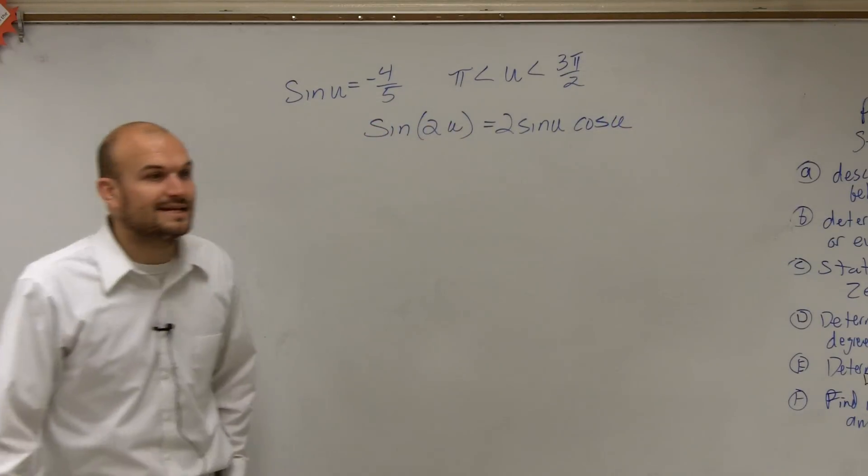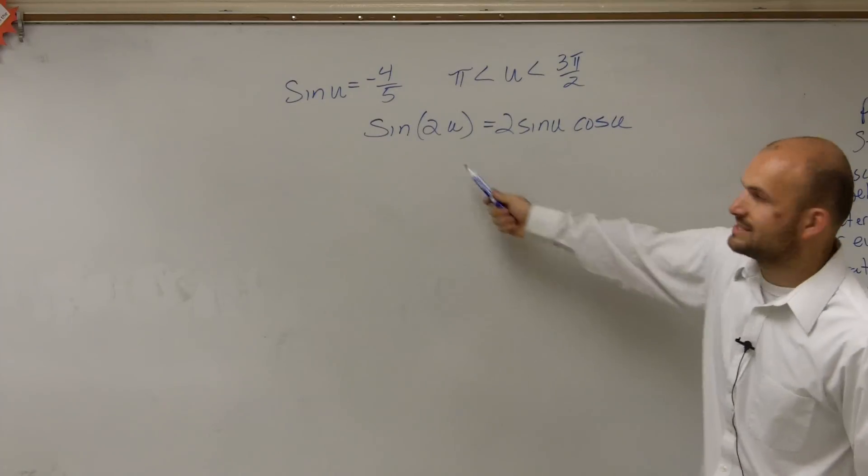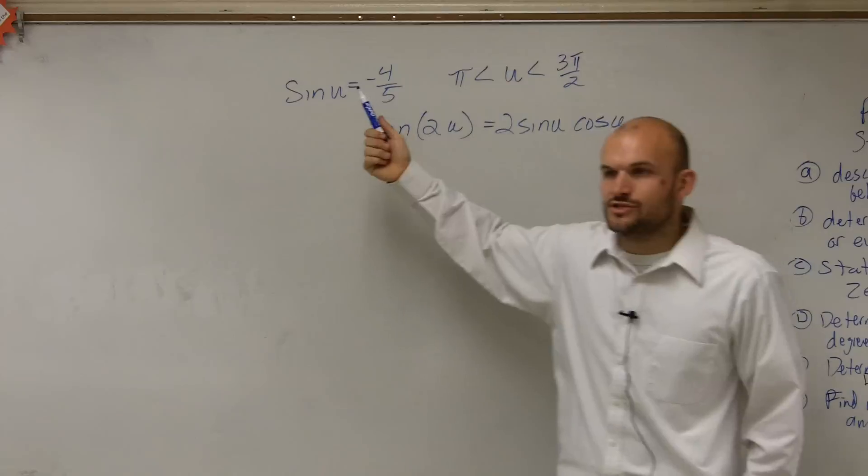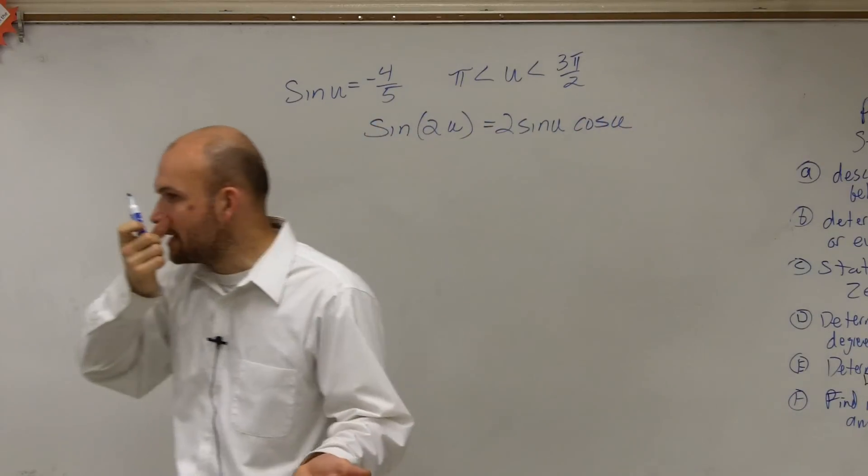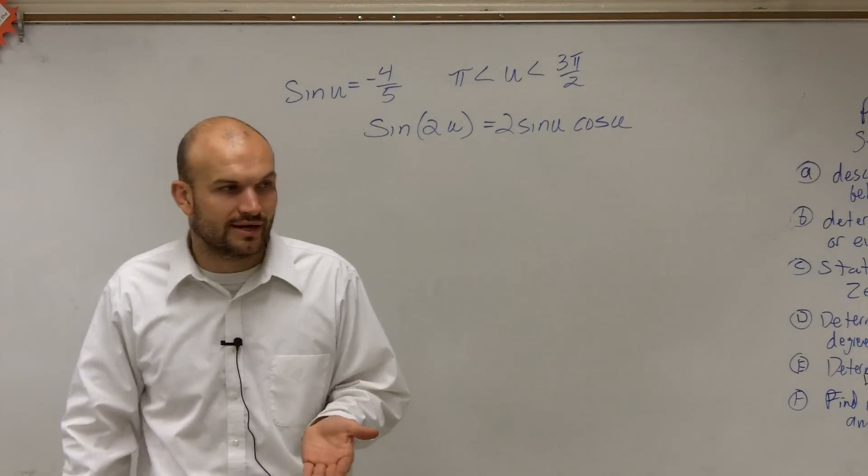So what I need to do is I need to figure out what is the sine of u and what's the cosine of u. Well, it tells me what the sine of u is, but now I need to figure out what the cosine of u is. So remember on the unit circle we know the sine represented the y coordinate on a point on the unit circle, and cosine represented an x coordinate.